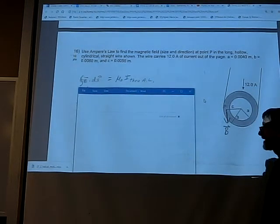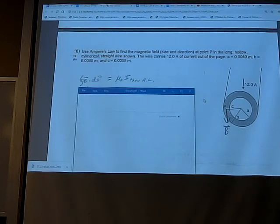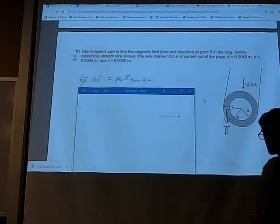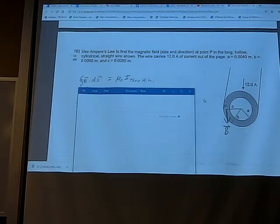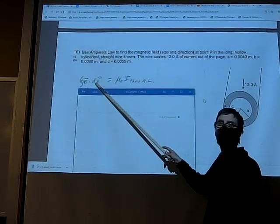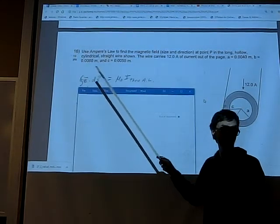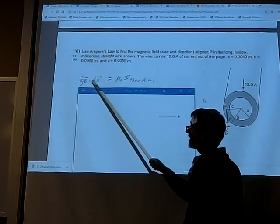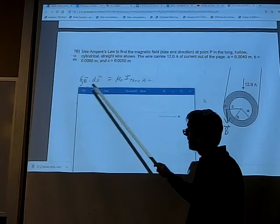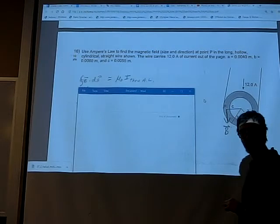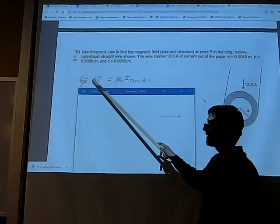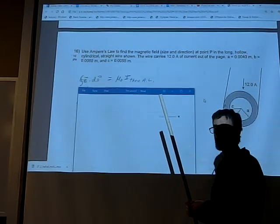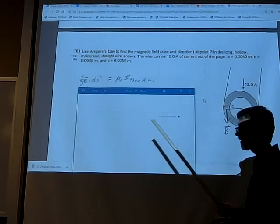So what we want to do is make the math easy for ourselves, so we want to make this line integral go away. That could happen if we pick an imaginary loop where B does not depend on which piece of the loop you're at. B doesn't depend on ds. Then you could pull B out of the integral. And we also want the angle between B and ds to be parallel to each other, an angle of zero, because dot products always involve the magnitude of one, the magnitude of the other, times the cosine of the angle between them. So if B and ds point the same way, the angle θ is zero and cosine of zero is one.